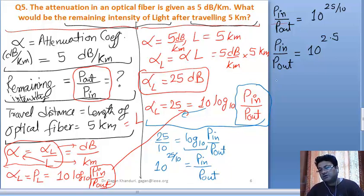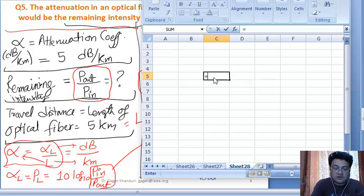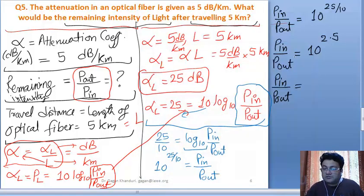I will use the help of Excel. You can do it on your calculator. I have to find out 10 raised to power of 2.5. This is 316.2278.